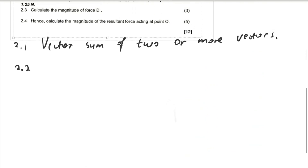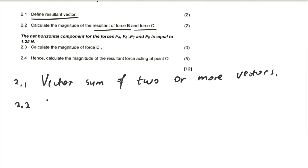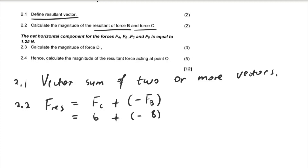The resultant F is FC plus (minus FB). Substituting: FC is 6 newtons and FB is negative 8 newtons, giving negative 2 newtons — that is 2 newtons to the left. The negative sign indicates the direction of the force.